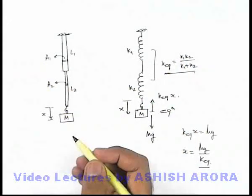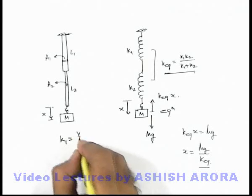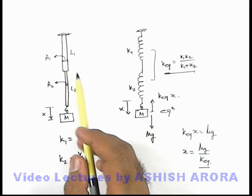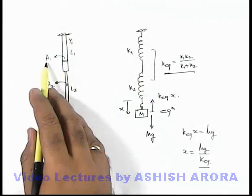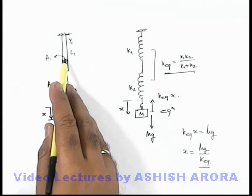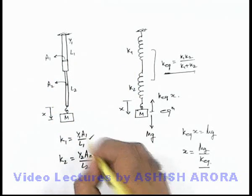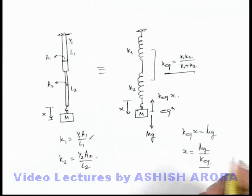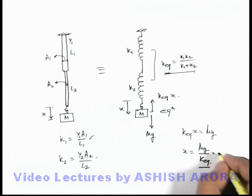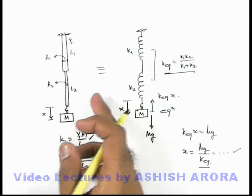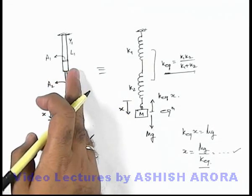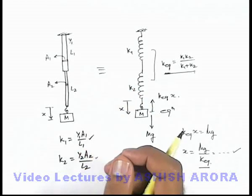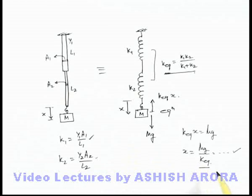The individual force constants are k1 = Y1·A1/L1 and k2 = Y2·A2/L2, as discussed earlier — for any rod with Young's modulus Y, length L, and cross-sectional area A, the equivalent spring constant is YA/L. By substituting k1 and k2 into the expression for k_eq, we get the total elongation. Similarly, when rods are connected side by side in parallel, we apply the parallel combination formula where the equivalent force constant equals the sum of individual force constants.